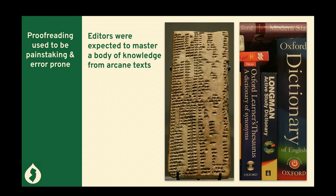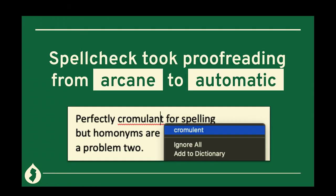I like to start here because proofreading used to be painstaking and error-prone. Your editors were expected to master a body of knowledge from arcane texts — the Oxford English Dictionary, or the Sumerian-Akkadian bilingual lexicon. You had to read things backwards, because if you just start reading you'd go right over all the typos. It was terrible. What changed? Spell check. All of a sudden you went from having to memorize arcane texts to something automatically popping up, finding your spelling errors.